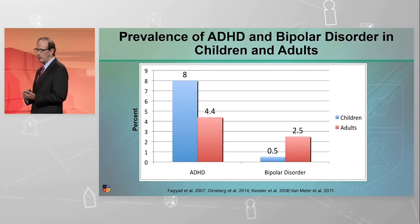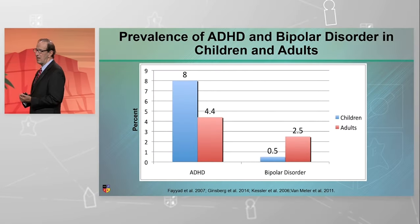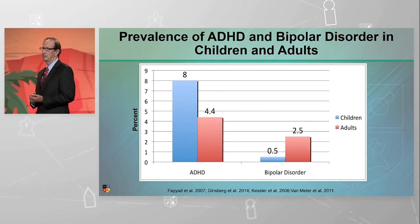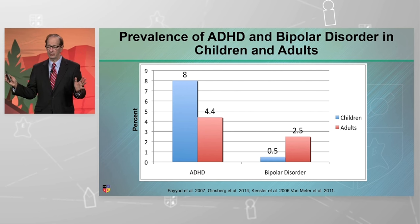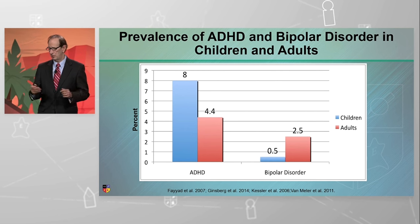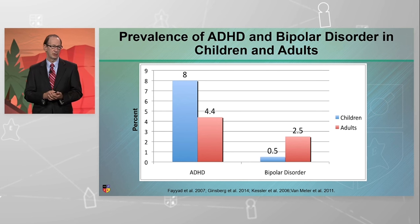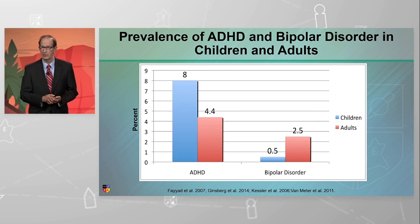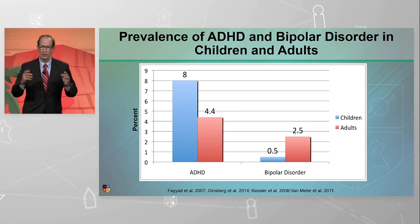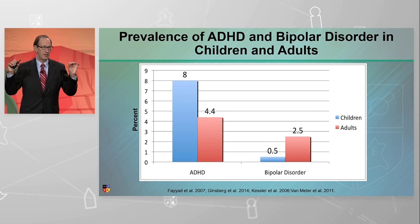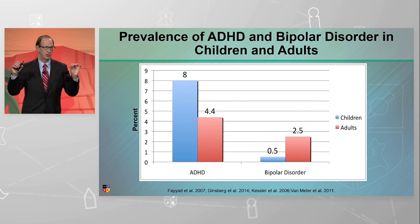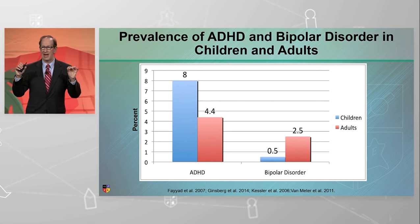This is the prevalence rate of ADHD and bipolar separately in children and adults. ADHD is 8 to 10% in children. In adults, it's 4.4%. So if you compare the percentage numbers together, it's an inaccurate way of comparing.